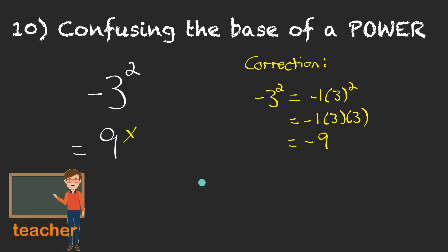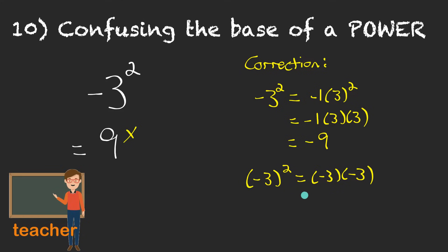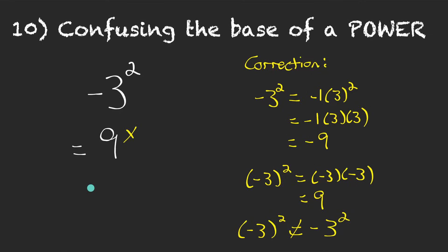So for that question, the base of the power is just 3. There's a negative in front of the power. If the question was written as negative 3 in brackets squared, that would mean the base of the power is negative 3, which means we have negative 3 times negative 3, and that is positive 9. So make sure you know these are not the same thing. Pay attention to what the base of the power actually is.